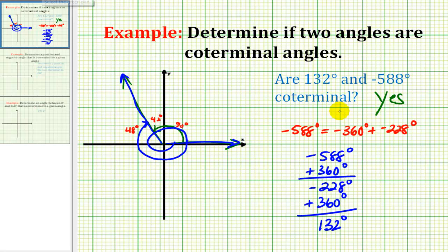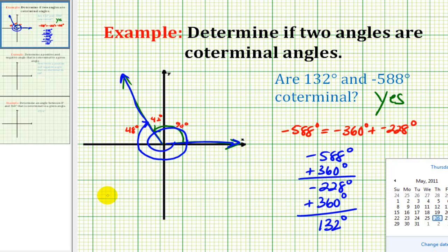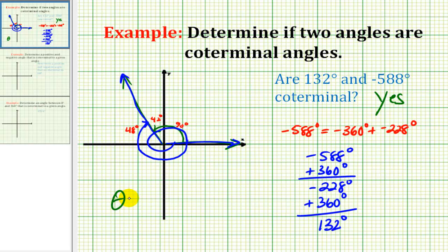So more generally, if we want to determine a coterminal angle with any angle theta, the coterminal angle would have to measure theta plus 360 degrees times k, where k is some integer. So if k was negative, it would be the same as subtracting multiples of 360. And if k was positive, it would be the same as adding multiples of 360 degrees.